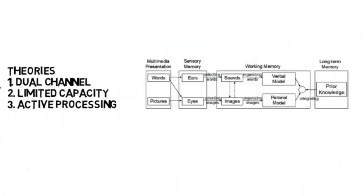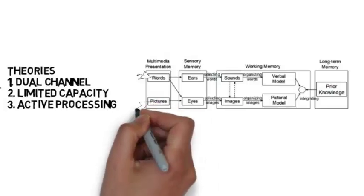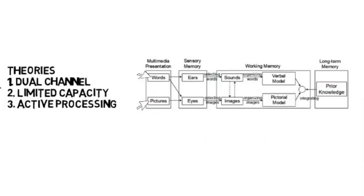Dual channel means that words and images are sensed apart, but are connected at the end of the working memory. At that point, they also connect to existing prior knowledge.